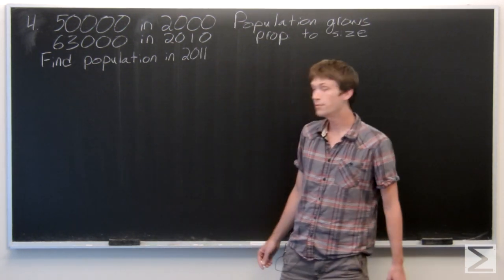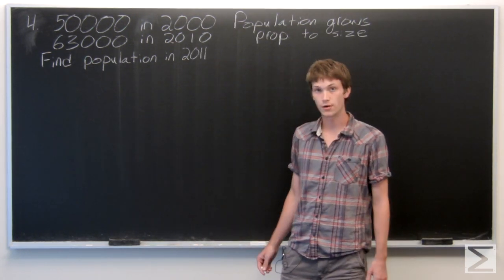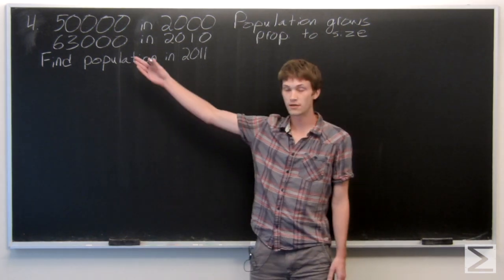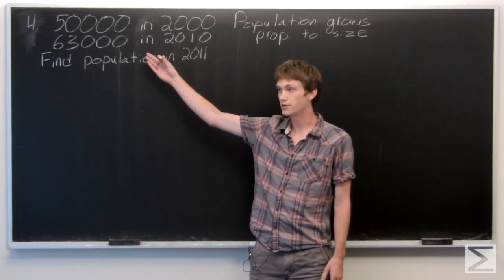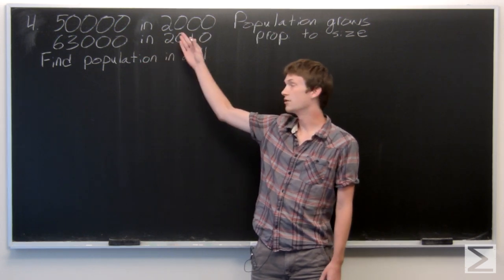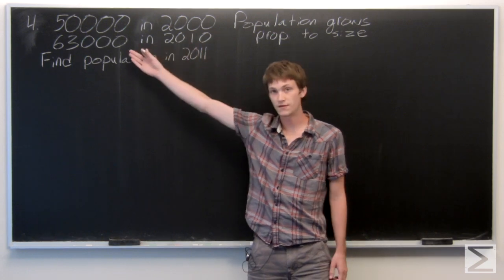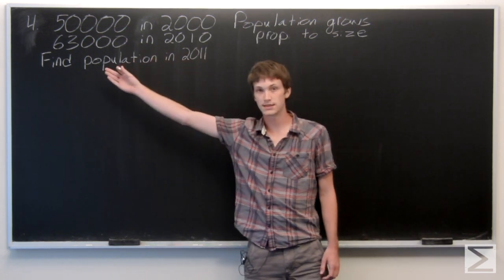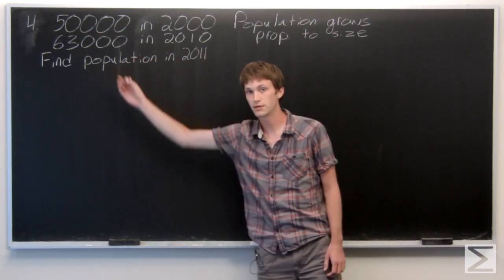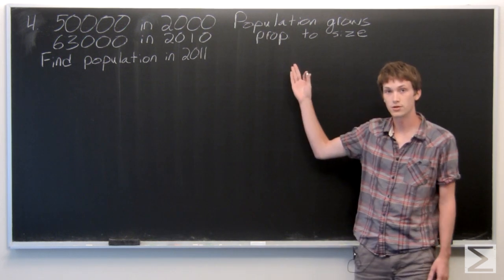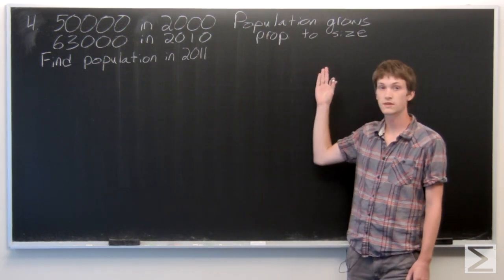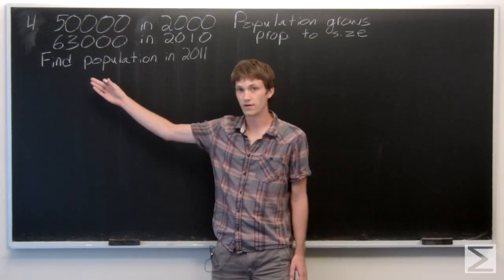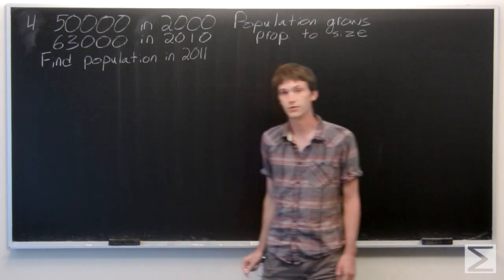With this problem we are going to be looking at a population model. We're given that in the year 2000 the population is 50,000, in the year 2010 the population is 63,000, and we know that the population grows proportionally to its size. We want to find out what the population is in the year 2011.